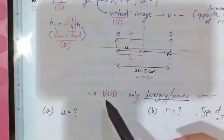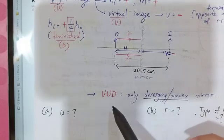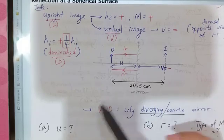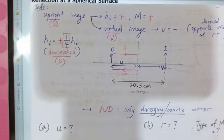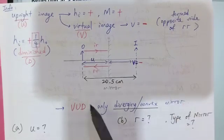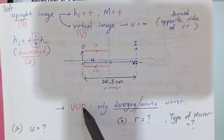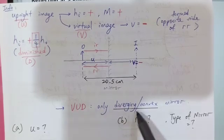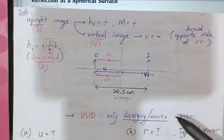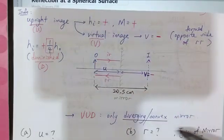This image is virtual, upright, and diminished. What type of mirror can form a virtual, upright, diminished image? Only the diverging or convex mirror. It is the convex mirror that forms this. So from just some limited information, we can get so many details.